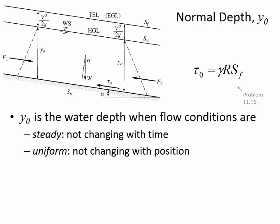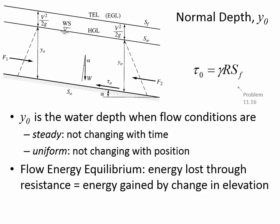In open channel flow there are many different depths, but normal depth means the depth flow would reach if nothing is disturbing it — no obstacles, no changing slope, no channel width changes. It's the equilibrium depth under steady, uniform conditions. In normal flow, all three slopes are equal: S_0, S_W, and S_F are all parallel, meaning the channel slope, water surface slope, and energy grade line slope are the same.